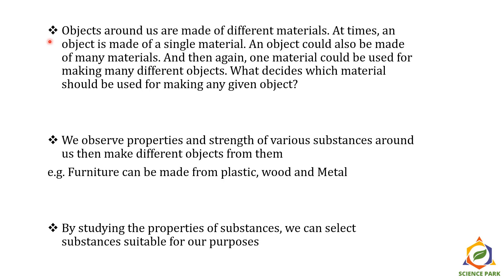Objects around us are made up of different materials. At times, an object is made up of a single material; at other times, an object could be made of many materials. And one material could be used for making many different objects. So what decides which material should be used for making any given object? We always observe the properties and strength of various materials and substances around us, and then we make different objects from them. For example, furniture can be made from plastic, wood, and metal. By studying the properties of substances, we can select substances suitable for our purposes.